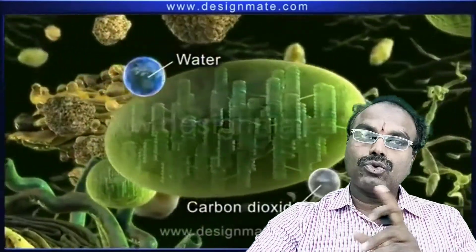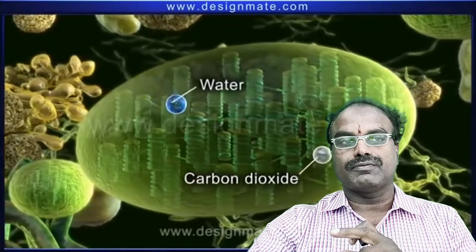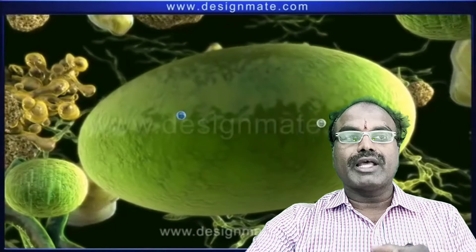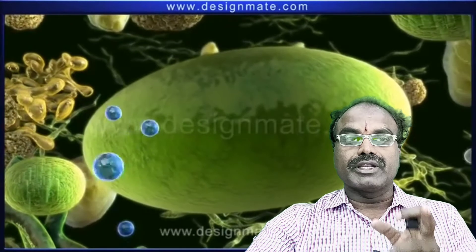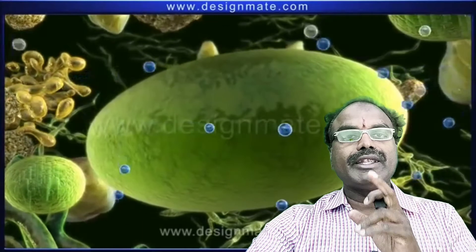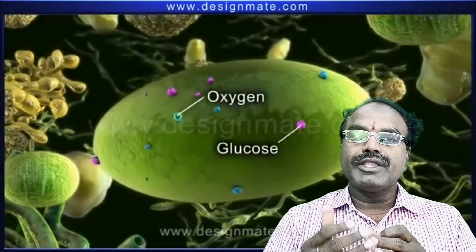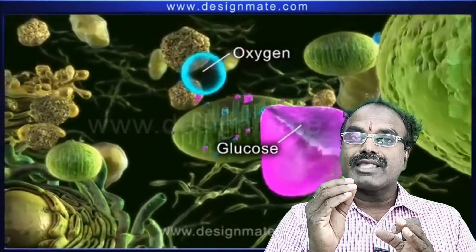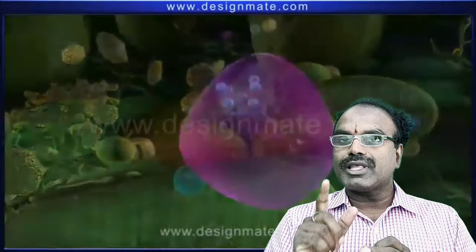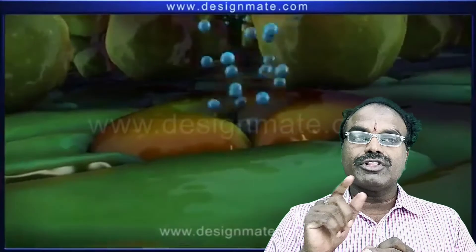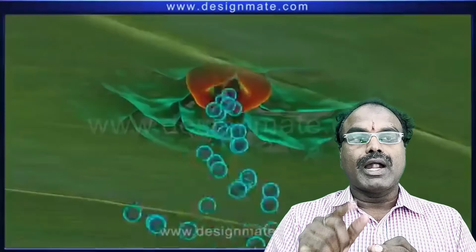The H+ ions undergo a series of changes in the dark reaction. The dark reaction is a light-independent reaction. The H+ ions produced in the light reaction are picked up by NADP and formed as NADPH. The H+ ions of the NADPH combine with CO2 to produce a glucose molecule. This is the important equation at the various stages.